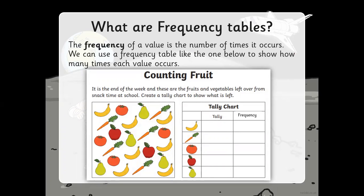For example, in this tally chart we have different fruits. The first one is banana. You count the bananas in the picture next to it — there are seven. You can write the frequency as a number, not as a tally. So the frequency of bananas is seven. Yesterday we called it the total, and today that total is called frequency.